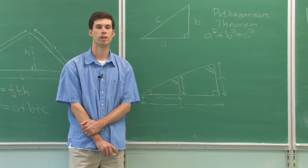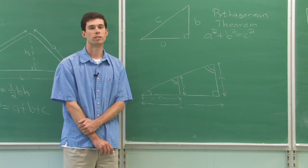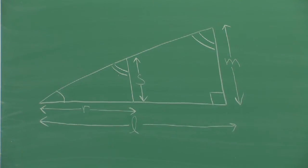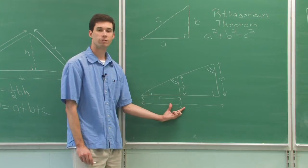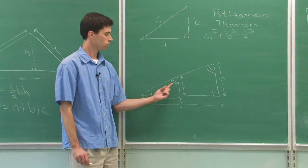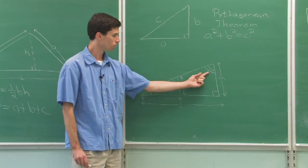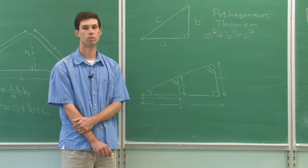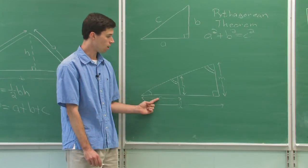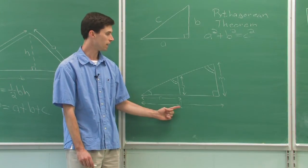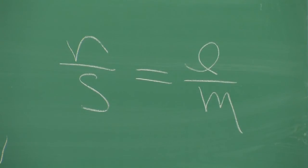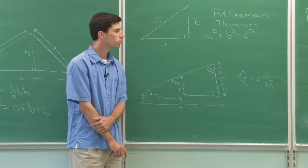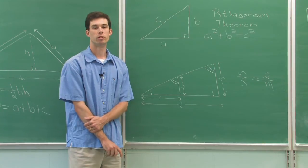Another situation which may come into play is when you have a couple of triangles that are what mathematicians call similar triangles. Similar triangles have angles that are equal. In this picture we have two triangles where the angles match. Whenever you have similar triangles, geometry tells you that the ratio of the sides have to be equal. So for instance the ratio of R to S must equal the ratio of L to M. And given this equality of ratios, one could solve for any of those variables needed in a particular word problem that you're working.